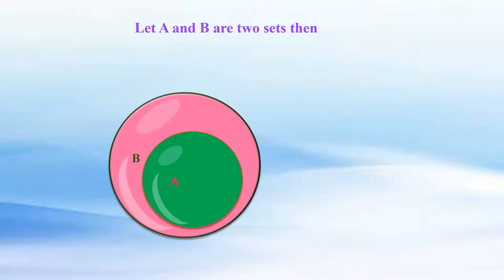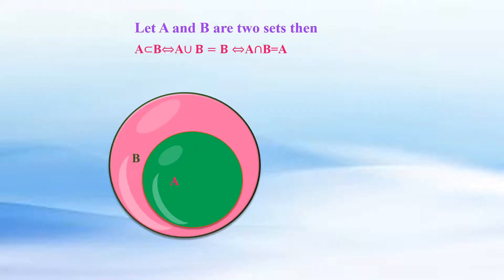Let A and B be two sets. Then A is a subset of B if and only if A union B is equal to B, if and only if A intersection B is equal to A.